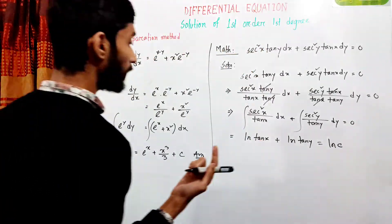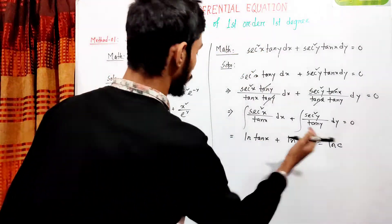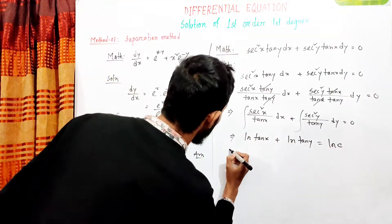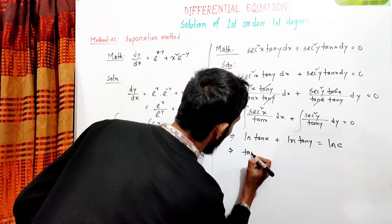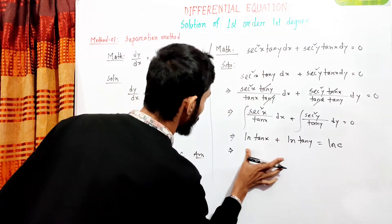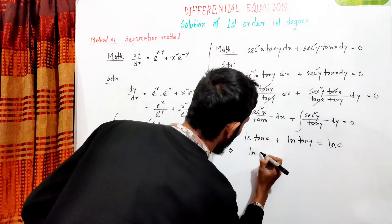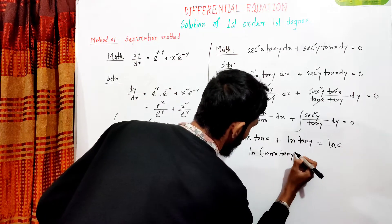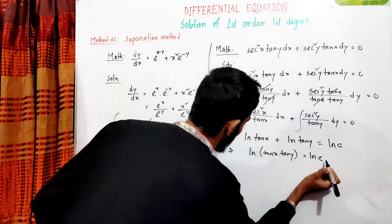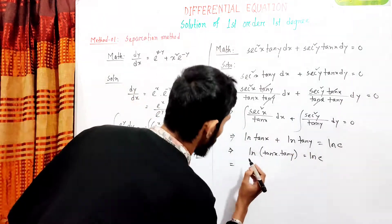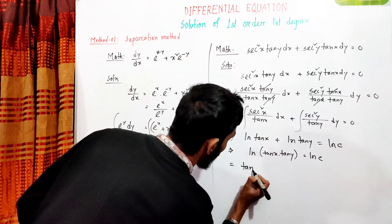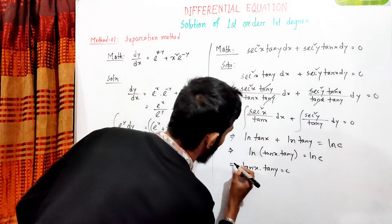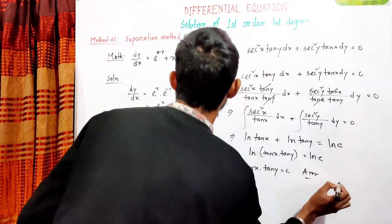Then C will be the arbitrary constant. The arbitrary constant — log C — is significant. So we can write tan x into tan y equals log C. Counting the result, tan x into tan y equals C. That is our answer.